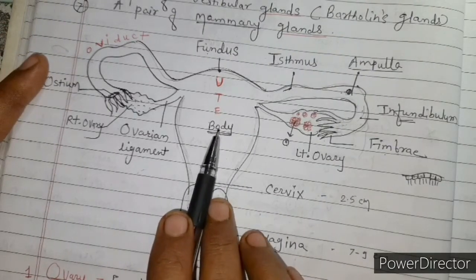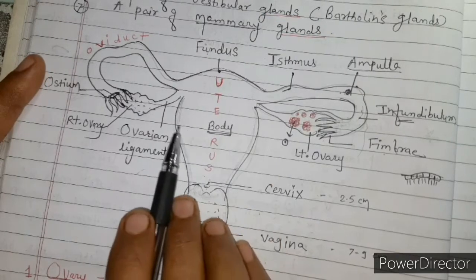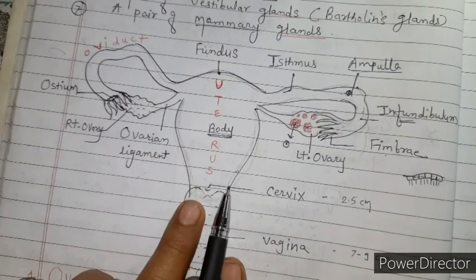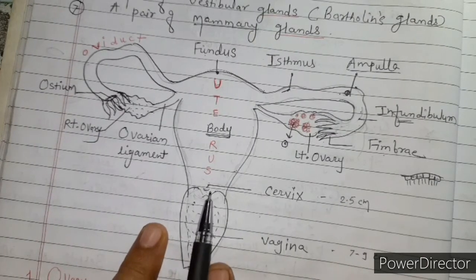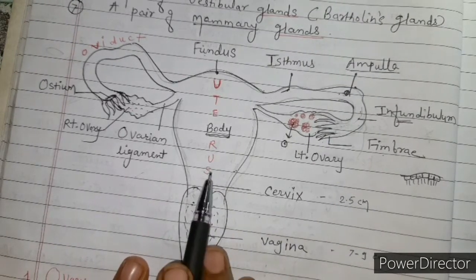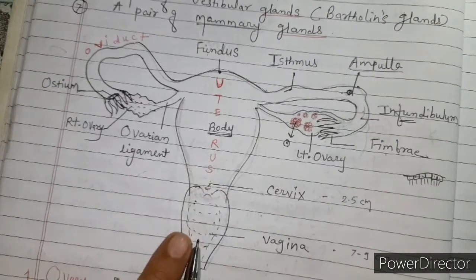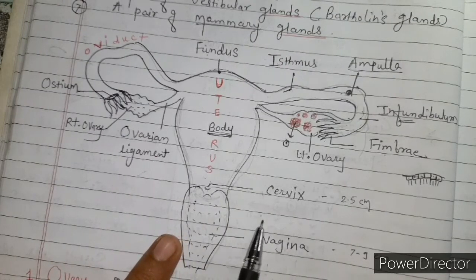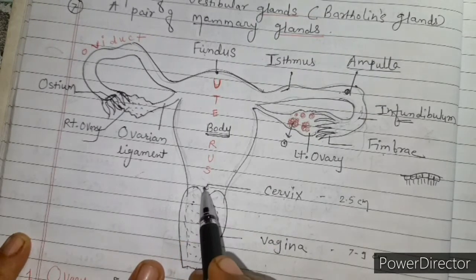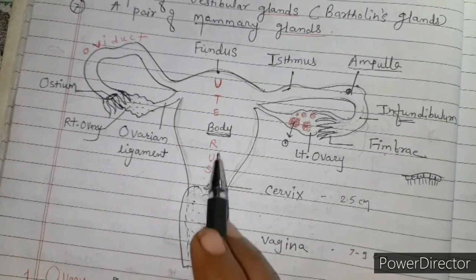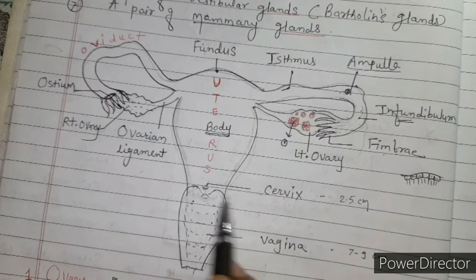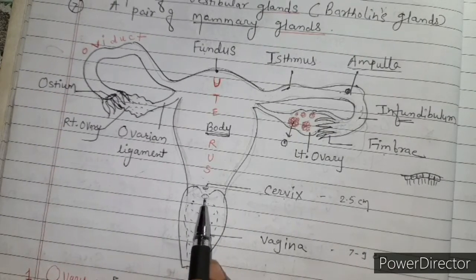The cervix is a narrow neck-like part, 2.5 centimetres in length. It extends into the vagina. The cervix has two openings: the internal os, which opens towards the body of the uterus, and the external os, which opens towards the vagina.